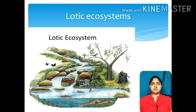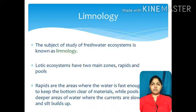The term lotic ecosystem is given to flowing water bodies, also called the riverine ecosystem. The lotic ecosystem includes all flowing water bodies like rivers, springs, and creeks. The subject of study of freshwater ecosystems is known as limnology. Lotic ecosystems have two main zones: rapids and pools.